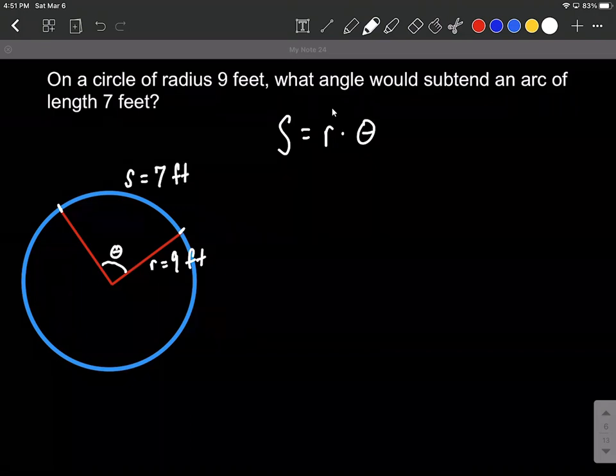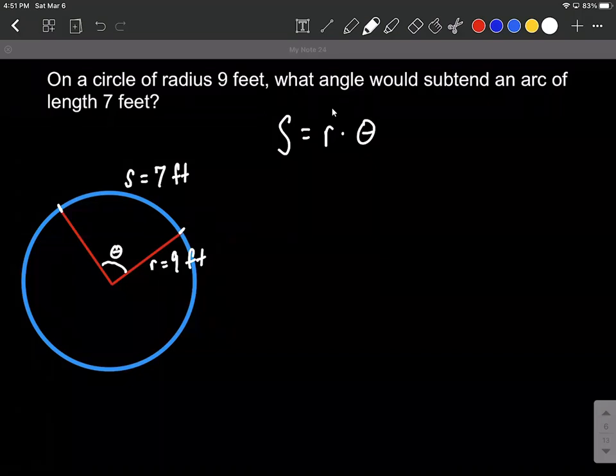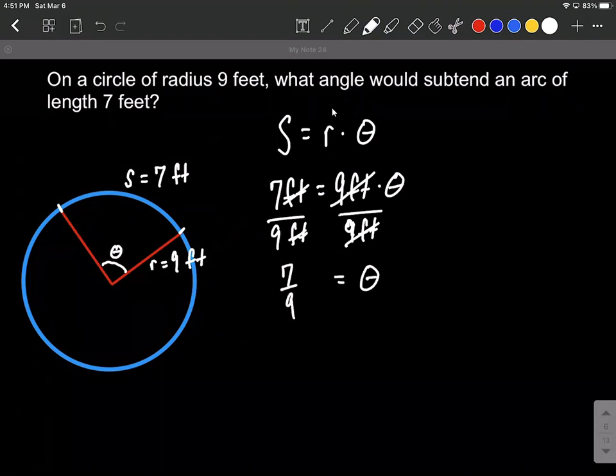So let's fill that all into the formula we have over on the right-hand side. So we have seven feet equals nine feet times theta. So to get theta all by itself, we just need to divide by nine feet. So divide both sides by nine feet. Puts theta on one side all by itself. And this would be nine or seven ninths radians, because theta is always in radians.